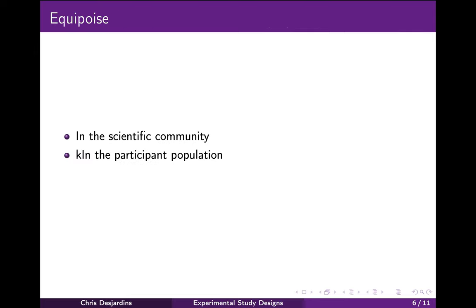In order to ethically carry out a randomized study, it is necessary to have what is called equipoise. Equipoise means that the scientific community as a whole is undecided about whether the new intervention works or not. You can't ethically randomize participants to the new treatment if you are certain that it does not work, and you can't ethically randomize to the current standard of care if you are certain that the new one works better. Generally, the study investigators believe that the new treatment is better, or they wouldn't be proposing the study, but there has to be equipoise in the scientific community overall.